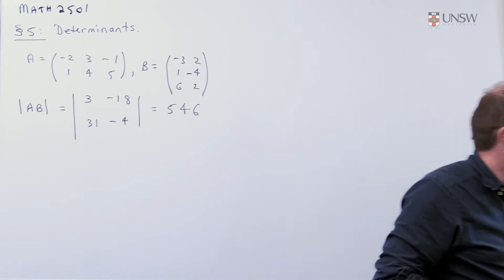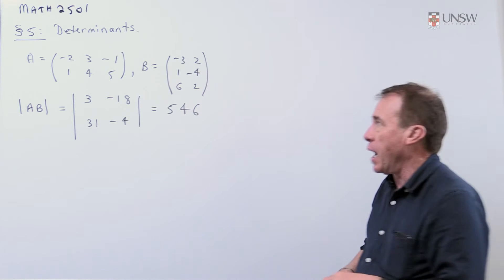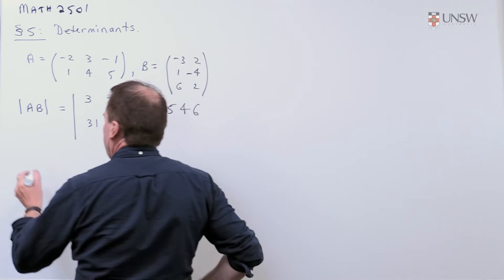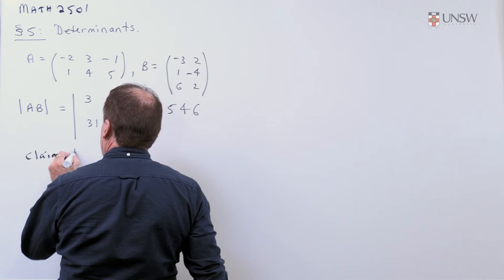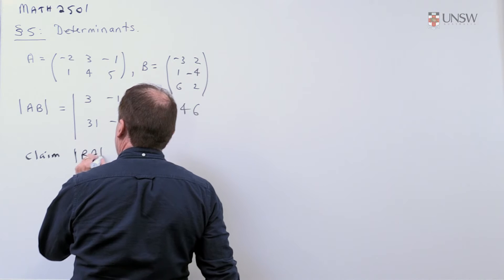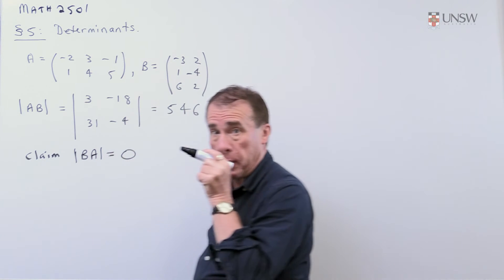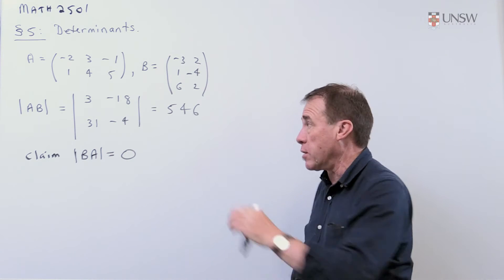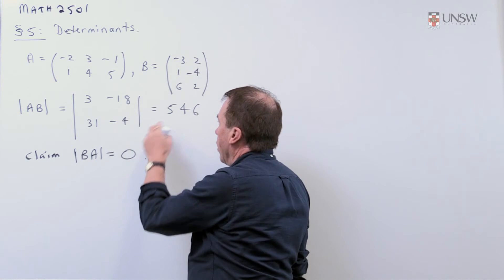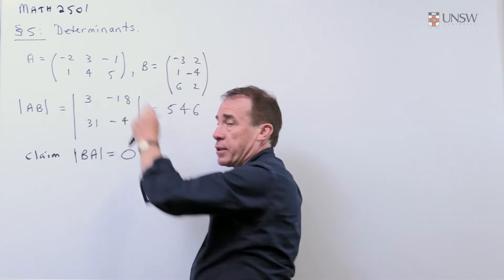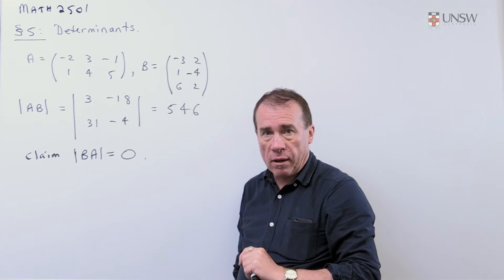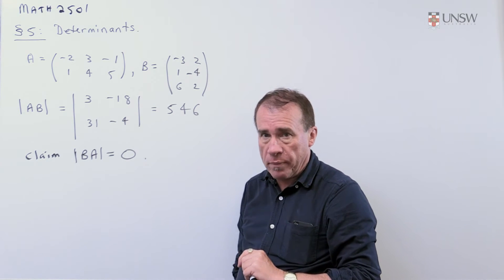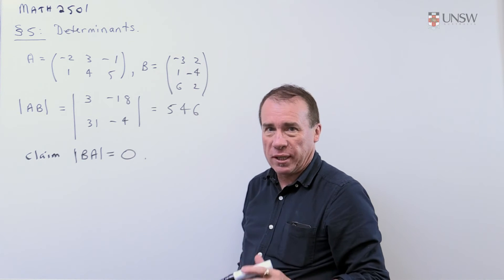On the other hand, if you go to get the determinant of BA, so I claim, without doing any calculation, the determinant of BA is zero. Without doing any calculations at all. Here I have to. No easy way. I can't get that number just staring at these matrices. I have to do the math. But the determinant of BA, I claim, is going to be zero without doing all the calculations.